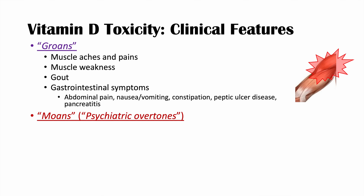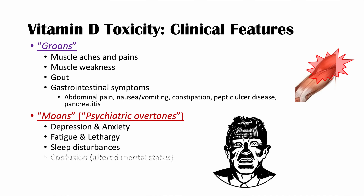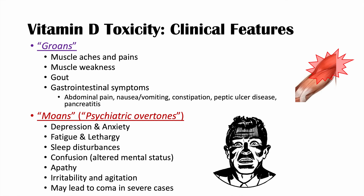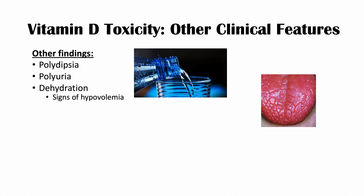The last category, moans or psychiatric overtones, includes depression and anxiety, fatigue and lethargy, sleep disturbances, confusion or altered mental status, apathy, irritability and agitation, and in severe cases even coma. There are also additional clinical features: polydipsia, polyuria, dehydration with signs of hypovolemia such as dry mucous membranes and skin tenting, hypertension, and weight loss due to anorexia.